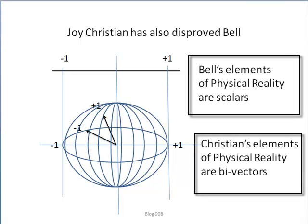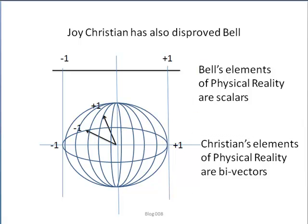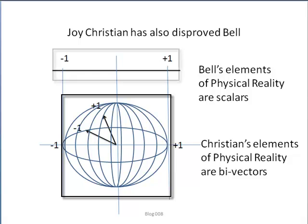Therefore, Bell's first equation misses important elements of physical reality by ignoring the sphere of data in favor of scalar data. Indeed, spin can take two values of +1 and -1 when measured, but these values can point anywhere on the unit sphere, not just along a line.